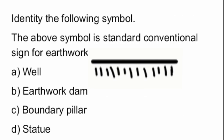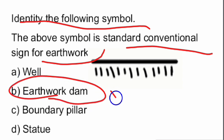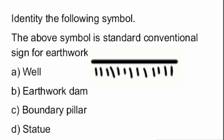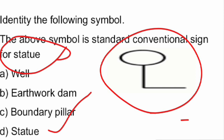Next questions involve identifying conventional symbols. The first symbol shown is the standard conventional sign for an earthen dam. The next symbol is a conventional sign for a statue.